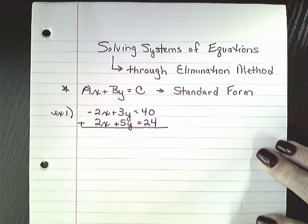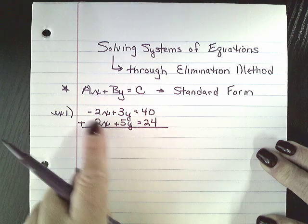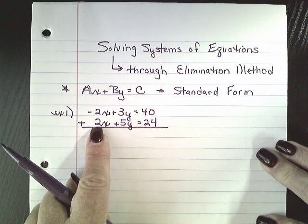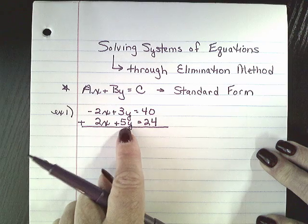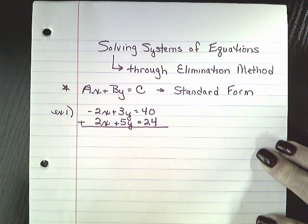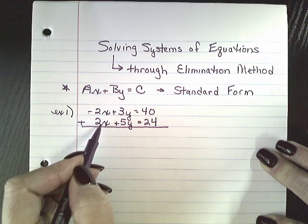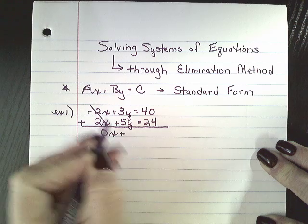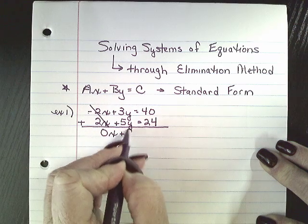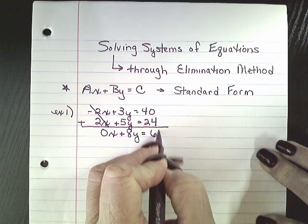So you want to look to see which variable has the same coefficient but opposite signs. So if I look at my x's, I have a negative 2 and a positive 2. If I add those two together, those are going to cancel each other out. I have a 3y and a 5y, so I can't do anything there right now because they're different coefficients. So I can add negative 2x plus 2x. They cancel each other out and they actually make 0x plus 3 plus 5 is 8y equals 40 plus 24 which is equal to 64.